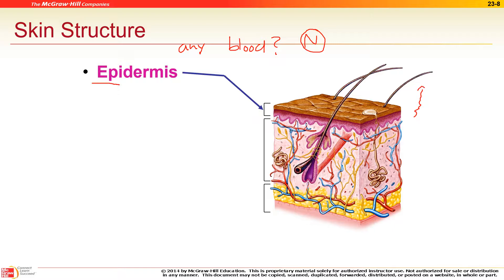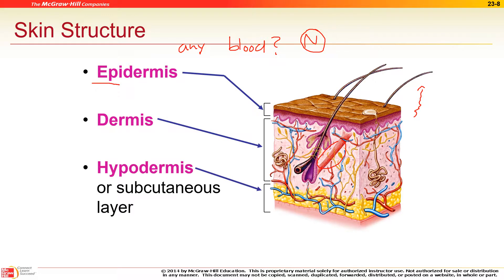The next layer is the dermis — this is where all the structures are: the accessory organs, hair, glands, and even your goosebump muscles. That goosebump muscle is called the erector pili.